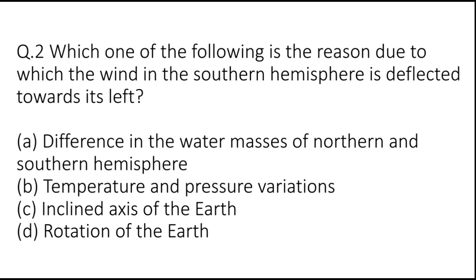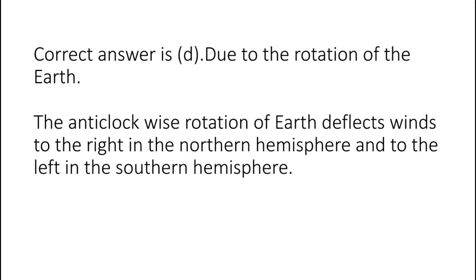Question 2: Which one of the following is the reason due to which the wind in the southern hemisphere is deflected towards its left? Options are A: difference in the water masses of northern and southern hemisphere, B: temperature and pressure variations, C: inclined axis of the earth, or D: rotation of the earth. The correct answer is D. The anticlockwise rotation of earth deflects winds to the right in the northern hemisphere and to the left in the southern hemisphere.